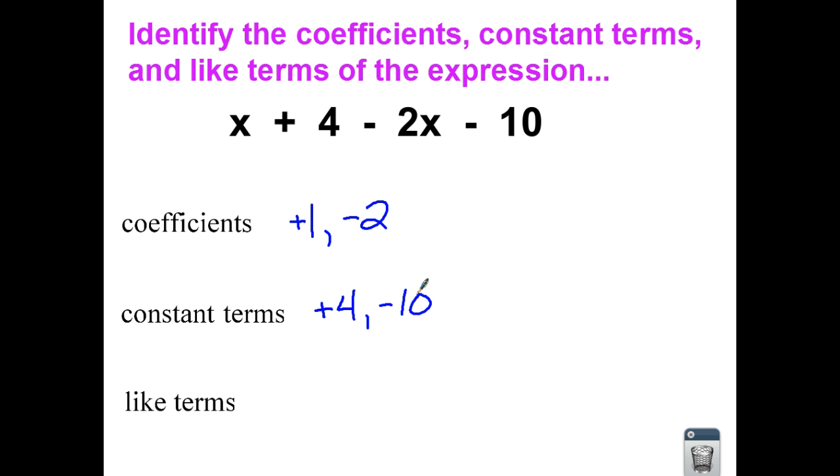So looking for the like terms, I know that I have variables that are called x. So the like terms would be positive 1x and negative 2x. The other like terms are the constant terms known as 4 and negative 10.